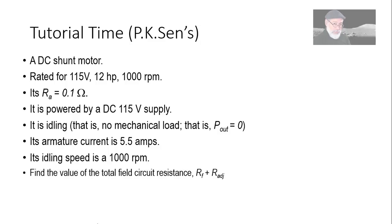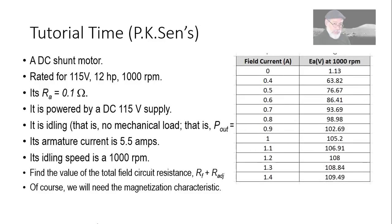The speed of the motor is measured and it's 1000 rpm. The question is, what is the total value of resistance in the field circuit? Adjustable resistor plus the value of the resistance of the field coil. We need the magnetization characteristic, right? Yes, this one. A linear table. Let's begin.